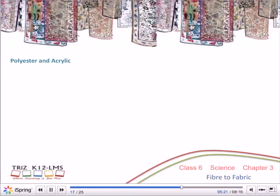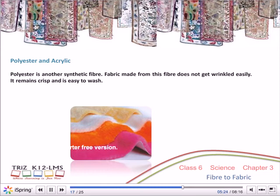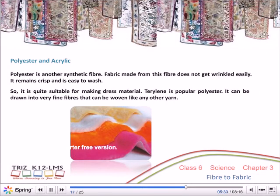Polyester and Acrylic: Polyester is another synthetic fibre. Fabric made from polyester does not get wrinkled easily — it remains crisp and is easy to wash, making it quite suitable for dress material. Terylene is a popular polyester. It can be drawn into very fine fibres that can be woven like any other yarn.